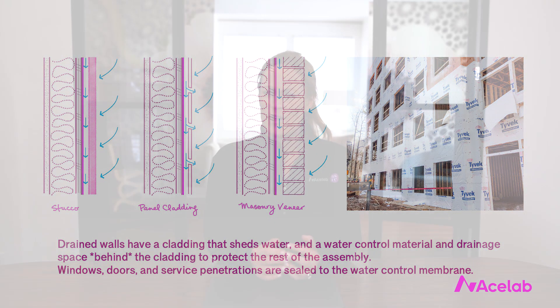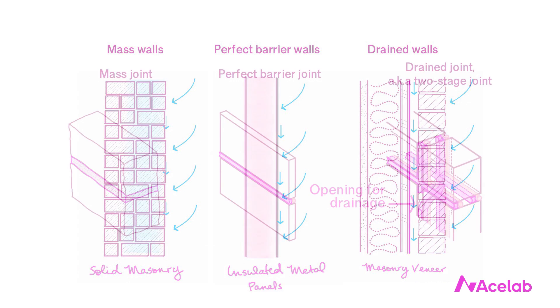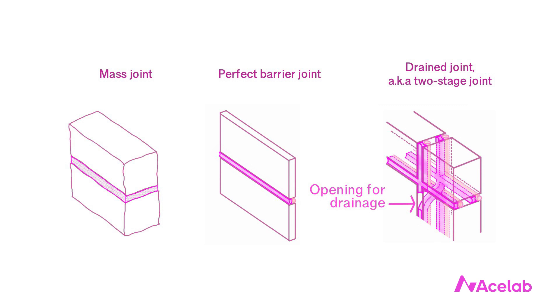Our topic today is windows, but the same three approaches to water management in walls also apply to how building joints manage water. We can have mass joints, perfect barrier joints, and drained joints. Mass joints safely store and redistribute water as they dry out. Perfect barrier joints perfectly block water — the classic example is a backer rod and sealant joint. Drained joints have two layers of protection with a drainage space in between.